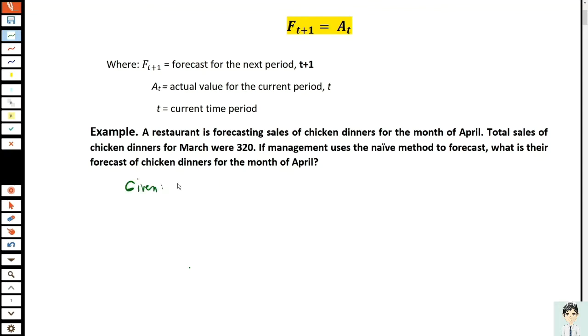We have: Forecast for the month of April equals unknown. The actual for the current period, which is March, equals 320 chicken dinners.